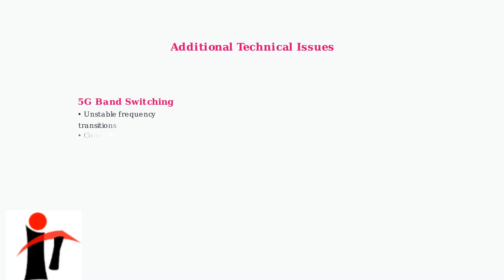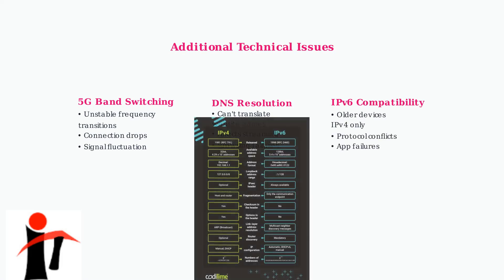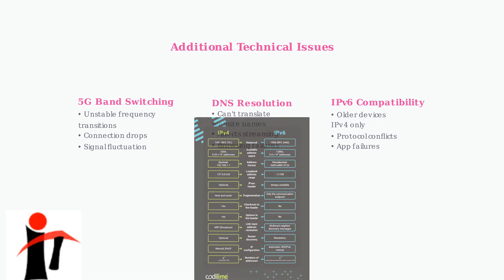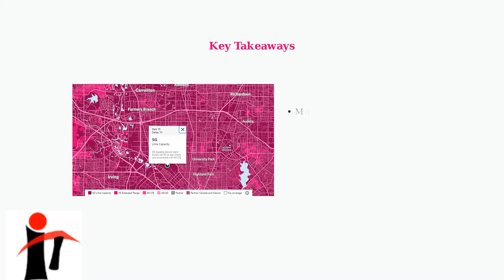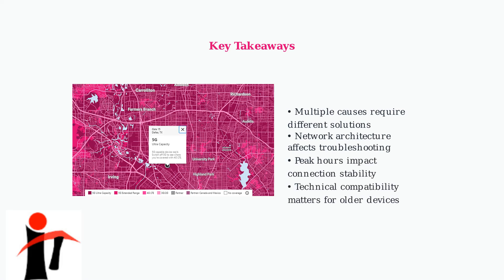5G band switching issues occur when your gateway struggles to maintain a stable connection as it switches between different 5G frequencies. DNS resolution failures prevent your devices from translating website names into IP addresses, while IPv6 compatibility problems affect older devices that only support IPv4 protocols. Understanding these root causes is essential for effective troubleshooting, as each problem requires a different approach to resolve the connected but no internet status.